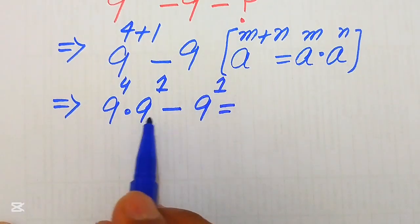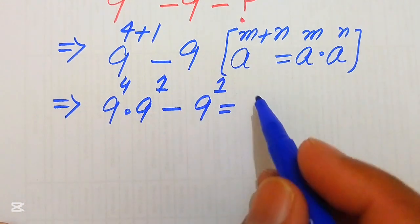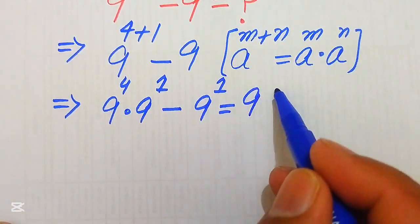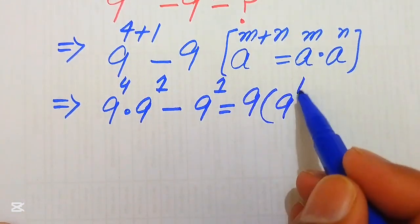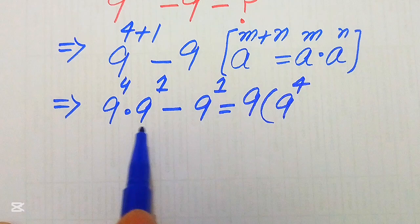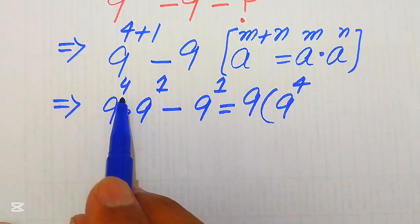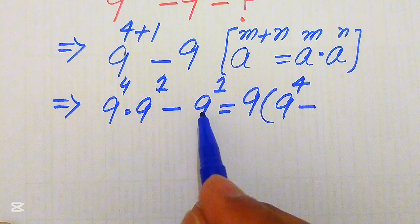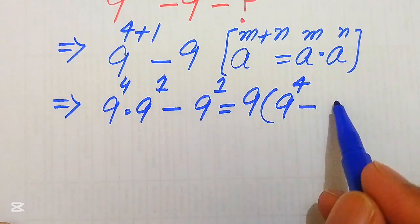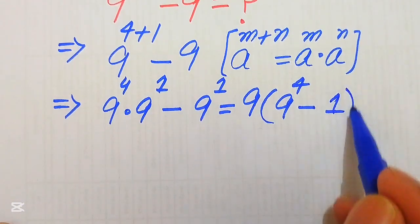In the next step, both terms involve 9, so we take 9 as a common factor. We get 9 multiplied by the quantity 9 to the power of 4 minus 1.